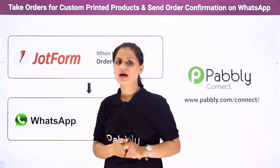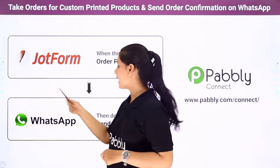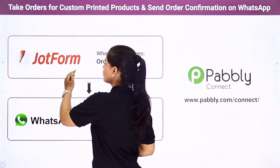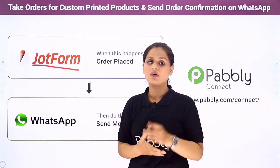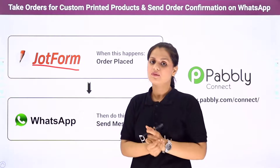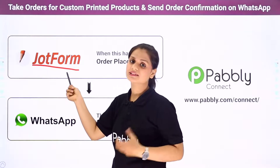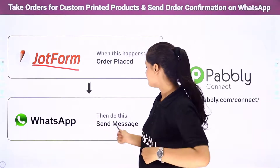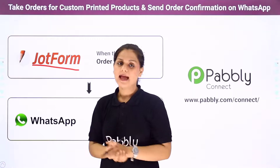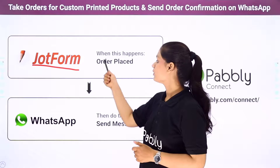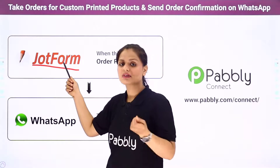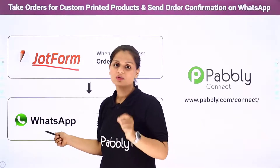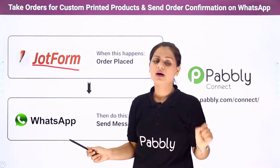To perform this task, I am using two software applications: JotForm and WhatsApp. I am using JotForm to receive orders. JotForm is an online form builder where you can create custom online forms and use them in various ways. Instead of JotForm, you can also use any other form builder such as Pably Form Builder, Typeform, or any payment gateway. To send messages, I am using WhatsApp. Whenever an order is placed through JotForm, a message will be sent to the customer and the owner on WhatsApp automatically.